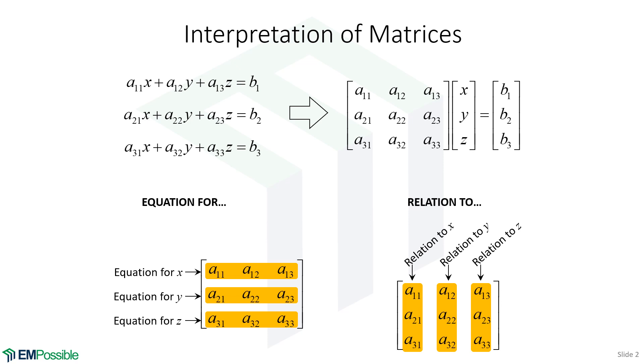The columns will be the relation to. For example, if we're in the third equation, we would say that's the equation for Z. And if we're looking at the A32 parameter, that's the relation to Y. That's describing how Z is related to Y. Based on that, it makes sense why our matrices have some symmetry to them. A32 is describing how Y is related to Z.